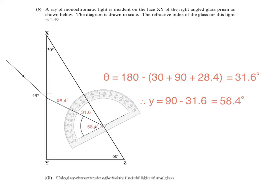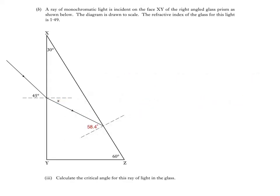Part 3 asks us to calculate the critical angle for this ray of light in the glass. So we use this equation, sin theta c is equal to 1 divided by n, where n is the refractive index. This gives us 1 divided by 1.49, which is 0.671.